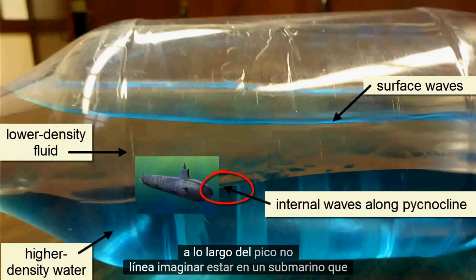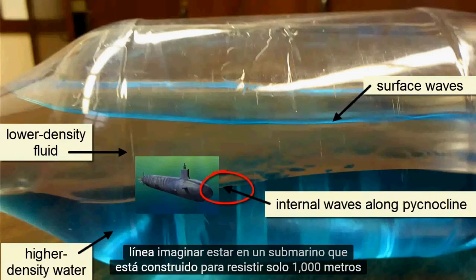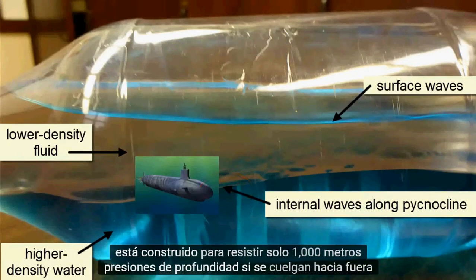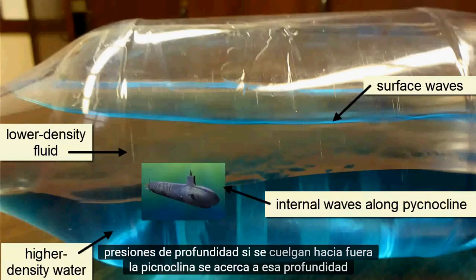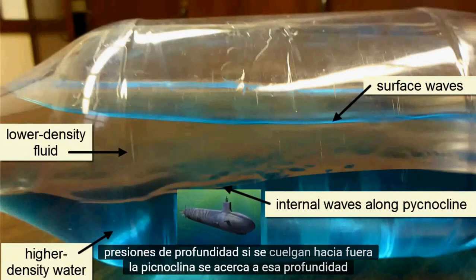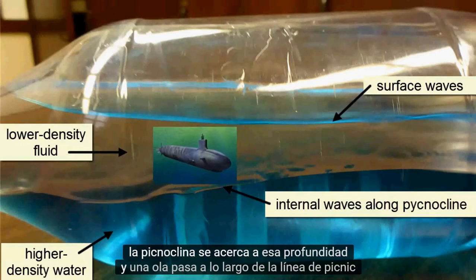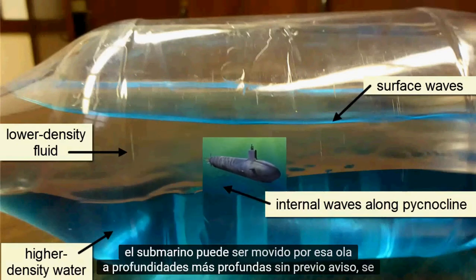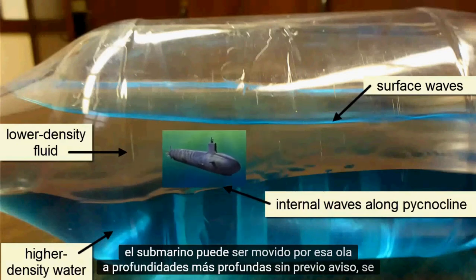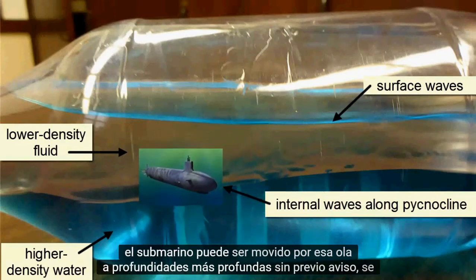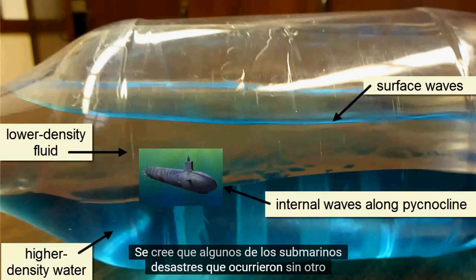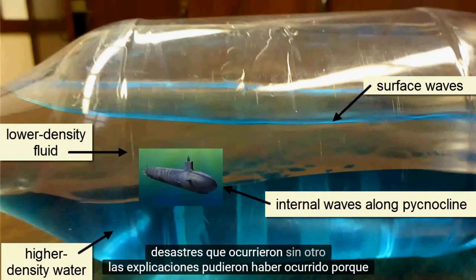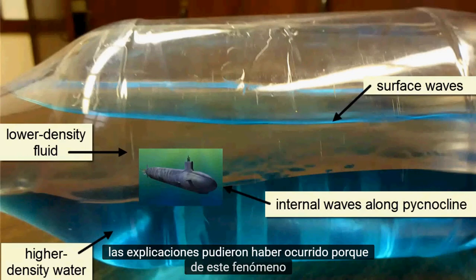Imagine being in a submarine that is built to withstand only 1,000 meters depth pressures. If it is in the pycnocline at close to that depth and a wave passes along the pycnocline, the submarine can be moved by that wave down to deeper depths without warning. It is thought that some submarine disasters that occurred without other explanations might have occurred because of this phenomenon.